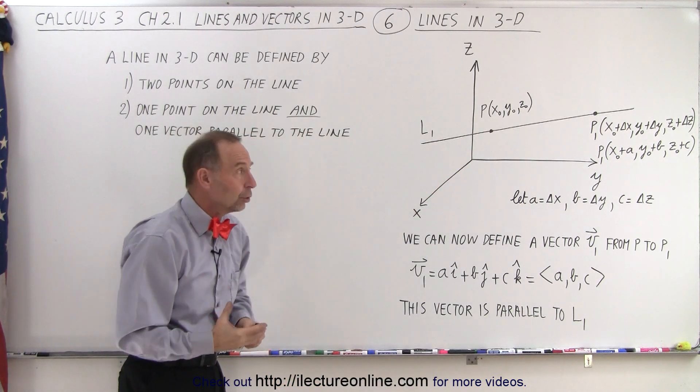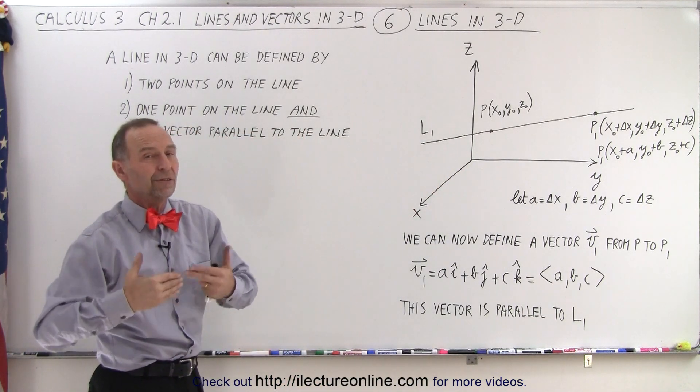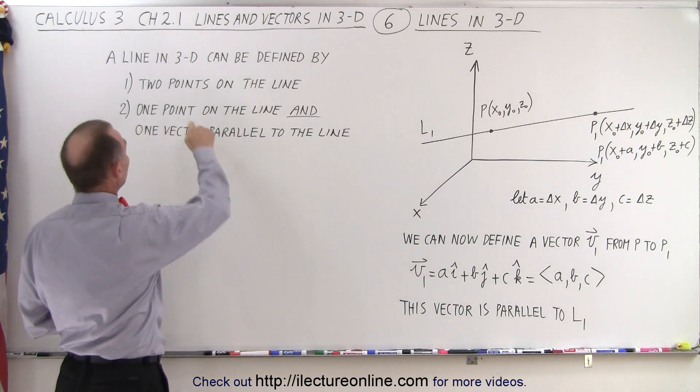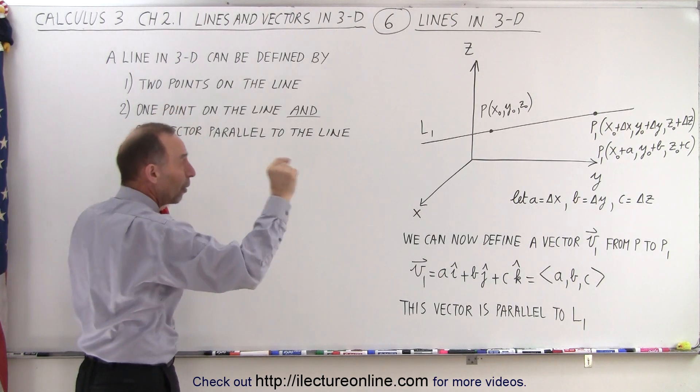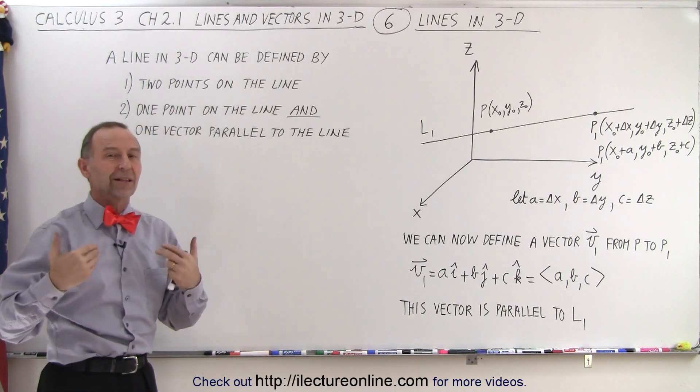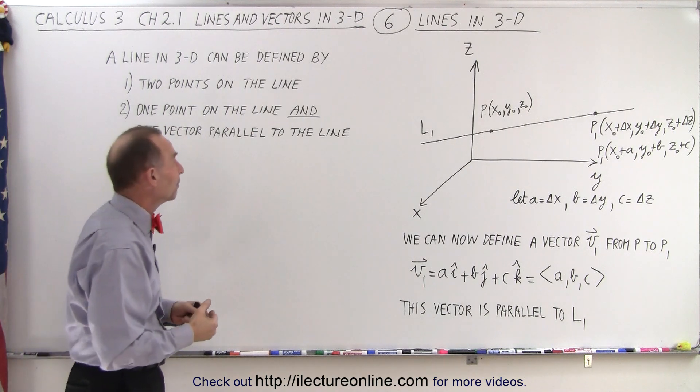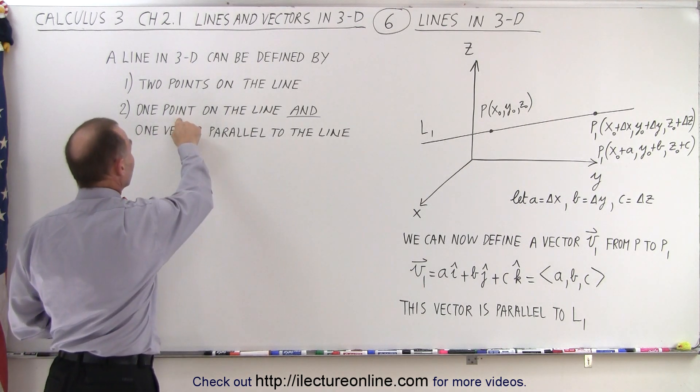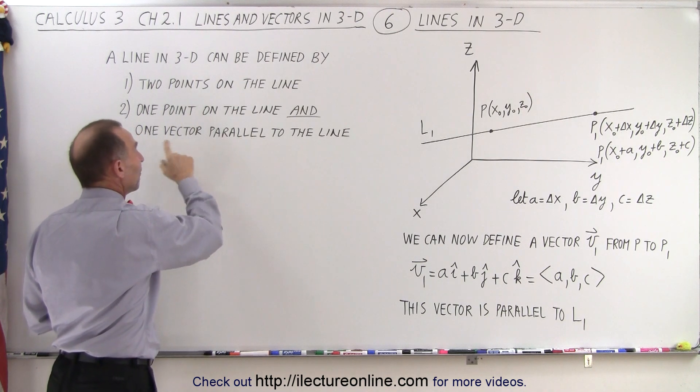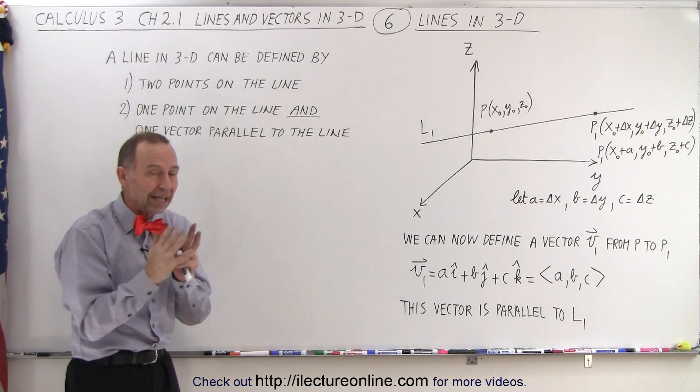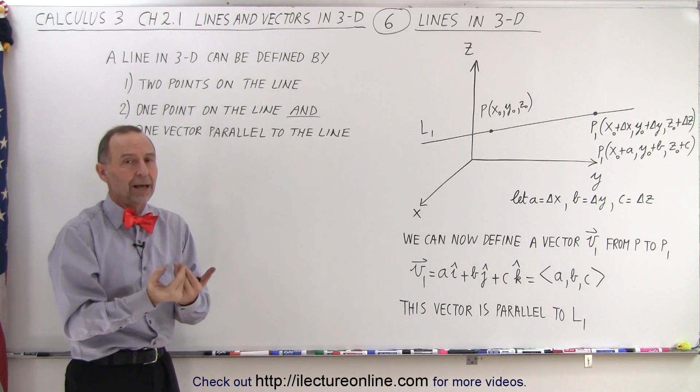And now we can conclude that there's two ways in which we can define a line in space. First of all, we can say if we know two points on the line, we can define the line, we can find the equations of the line. If there's one point on the line that's known, and we know a vector that's parallel to the line, together, they can also define the line.